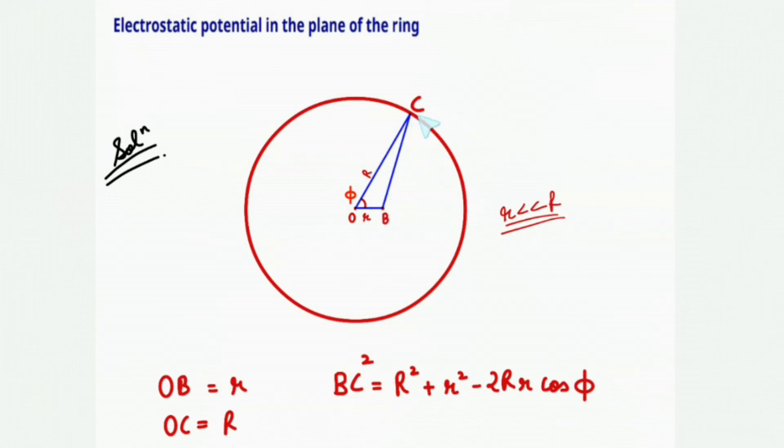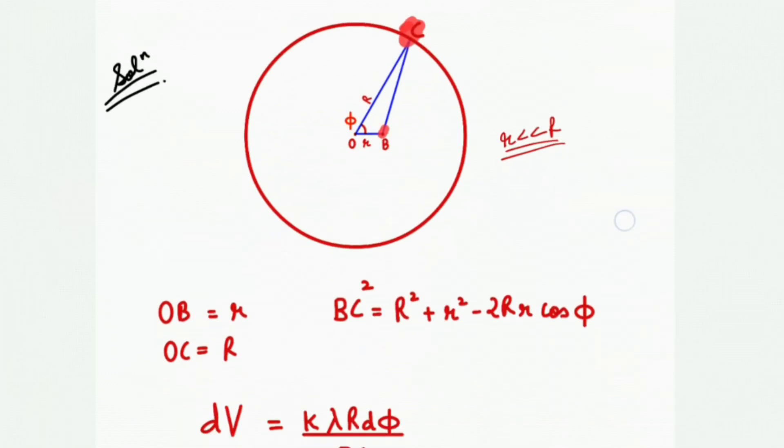First we'll consider a differential charge with dimensions r d phi, and we'll find the potential due to the differential charge at point B.